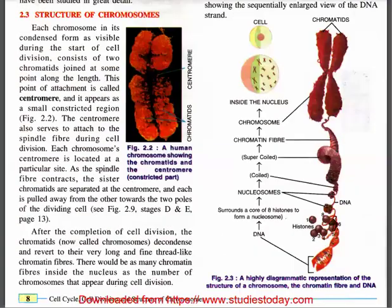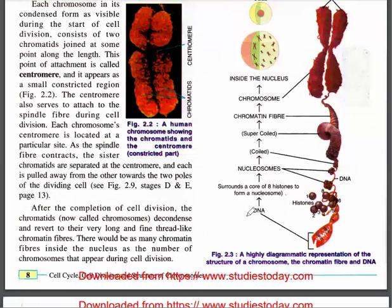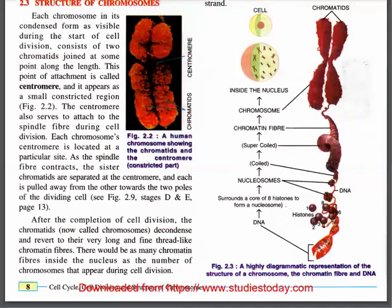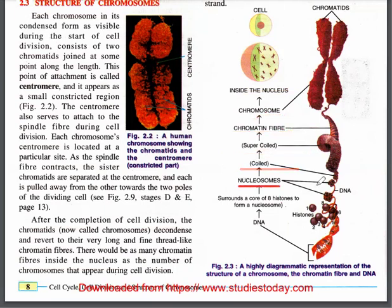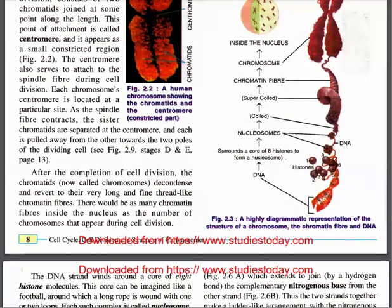The structural hierarchy goes: cell, then inside the nucleus — chromosomes, then chromatin fibers which are supercoiled. DNA wraps around a coil of eight histones to form a nucleosome, and then you have the DNA strand itself.